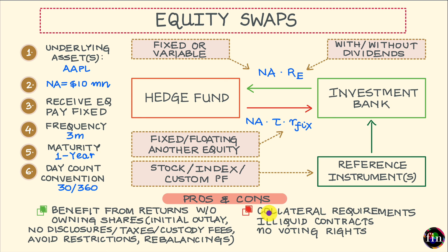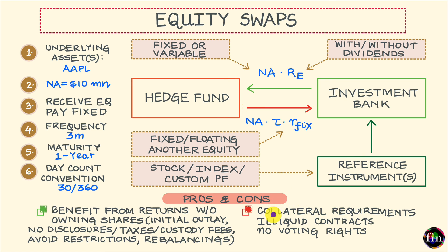Please also note that equity swaps can prove to be a very illiquid way of gaining exposure to your chosen reference instrument. Just in case the hedge fund wants to unwind this equity swap prior to its stated maturity date, unwinding this swap can prove to be troublesome. Lastly, getting exposure to your reference instrument via an equity swap will not give you the voting rights which direct investment in your reference instrument will provide.